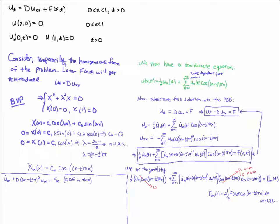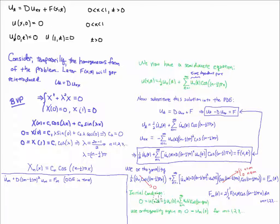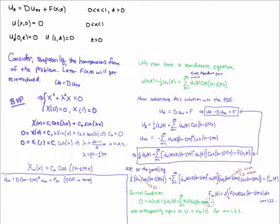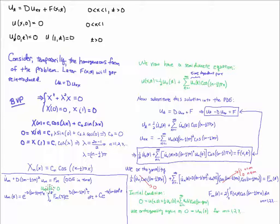This gives me the ODE for u_n. For the initial condition, I use u(x,0) = 0. Plugging t = 0 into the solution and applying orthogonality — doing the inner product with cosine_m — terms with n ≠ m vanish and I'm left with u_m(0) = 0. That gives me the initial value for this problem.